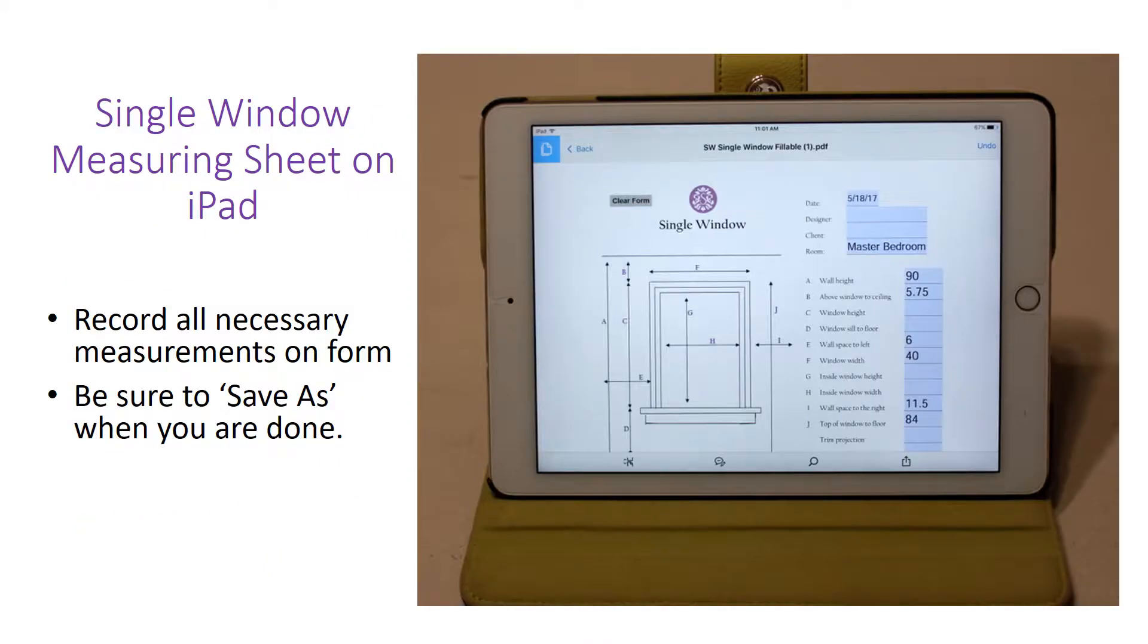I started with these single windows. I actually had two in this bedroom, each flanking on either side of the bed. These are for stationary panels, so I did not need every single piece of information. I took my iPad with me. This is actually my iPad you see in the picture. I opened it up and easily could fill out all of these measurements.